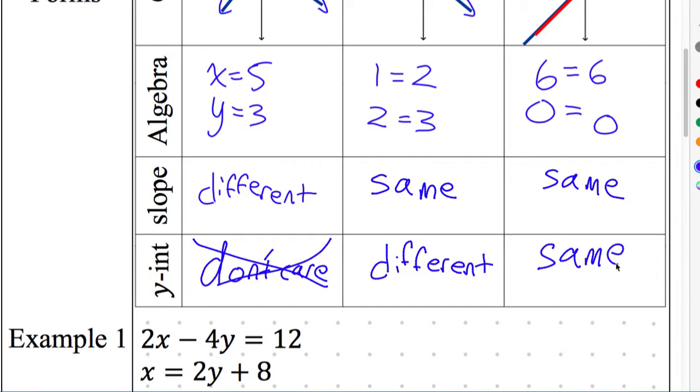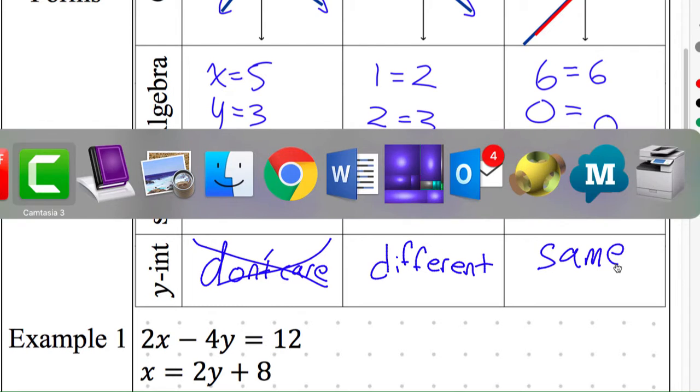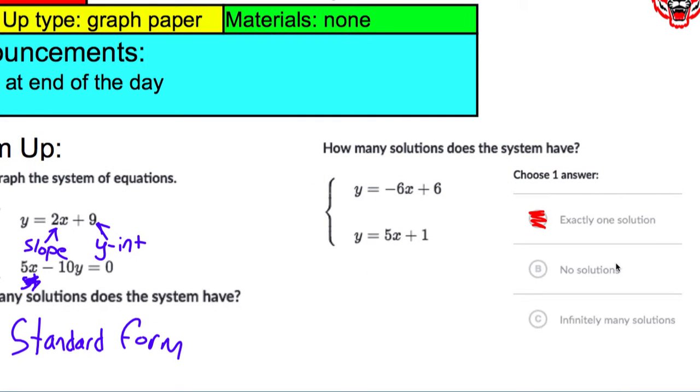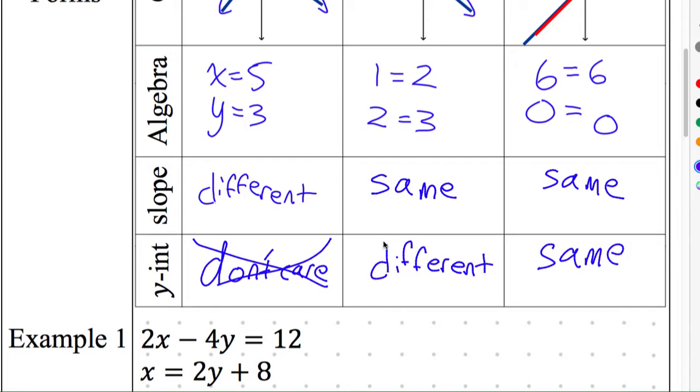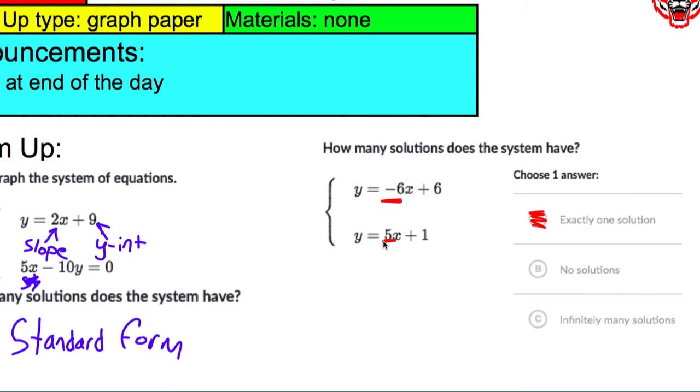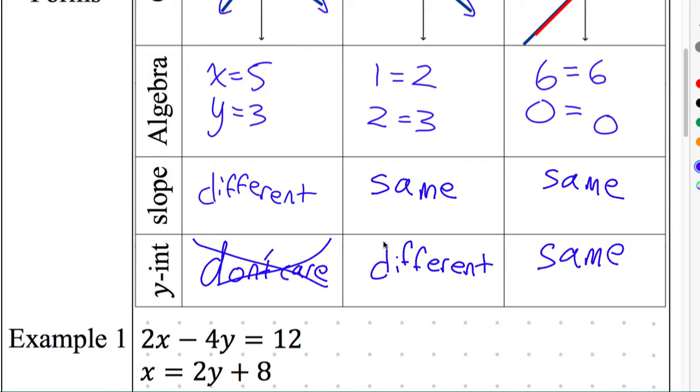So now we have our table, and that refers exactly to what we did on the warm-up. So on the warm-up, we had this problem where we were asking about how many solutions, and we saw, okay, well, this had a slope of negative six, this had a slope of five. Those are different numbers. Negative six is different from five. If it's different slopes, we come back to our notes and we say, oh, the slopes different, far left. Different means we're in the category of one solution, and we're immediately able to say the answer here is one solution.